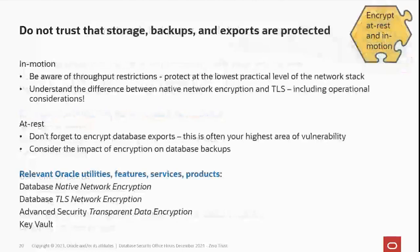Don't trust that your storage, your backups, and your exports are protected — assume the attackers are going to try and gain access to those. Encrypt your data in motion and at rest. For data in motion, we offer two types of encryption: native network encryption and transport layer security network encryption, both with their own advantages and disadvantages. For data at rest, our solution is Transparent Data Encryption, part of Advanced Security. And whenever you encrypt, you also have to manage your encryption keys, which means Oracle Key Vault.